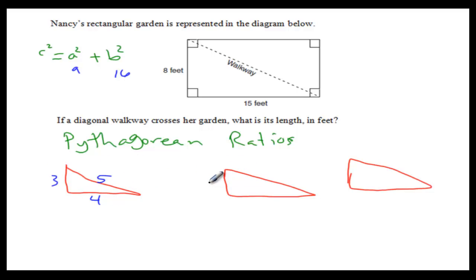Same thing. The other ratio is if this one is 5, this one is 12, the hypotenuse will be 13.